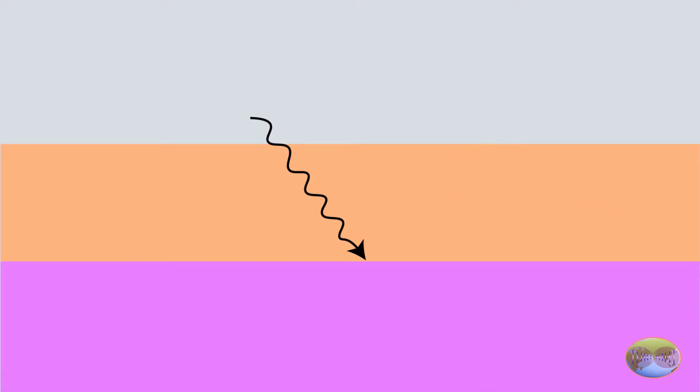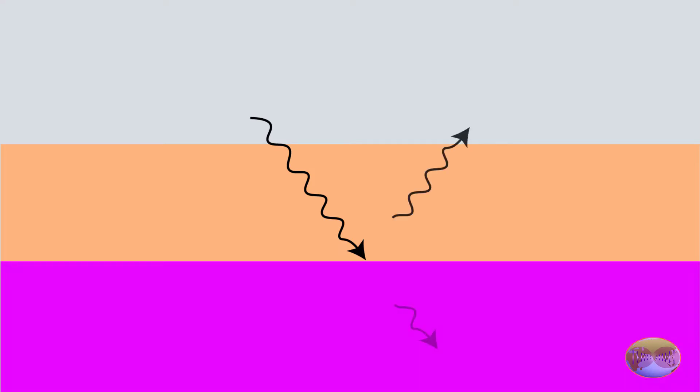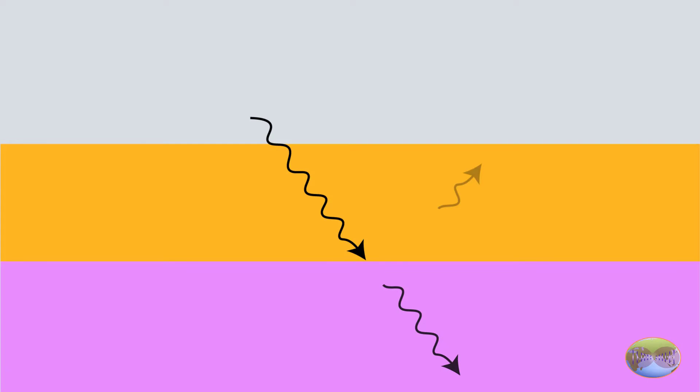This is what essentially happens when we send a wave into the subsurface. The wave energy returns with different energy and amplitude based on the impedance contrast between the layers.